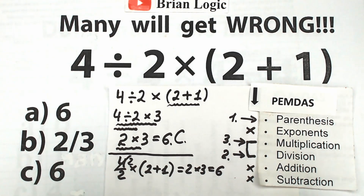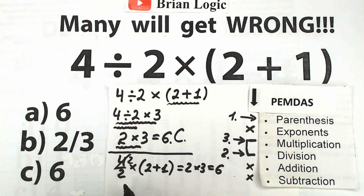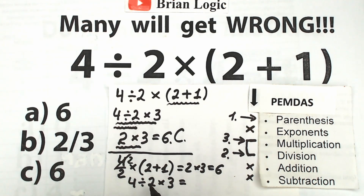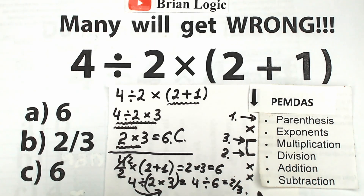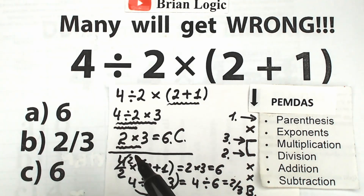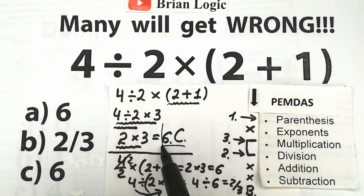Some students tell me we can write 4 divided by 2 times 3 as 4 divided by 6. I ask them: why multiply first before the division? This is a very bad solution in terms of math. If you want to write 4 divided by 6, you need to put parentheses around the denominator. With parentheses, it means you divide 4 by the whole entire product on the right-hand side — but that's a completely different problem. A lot of students give answer B (2/3) because they think we divide by the whole product, but we don't have those parentheses, so we must go from left to right.